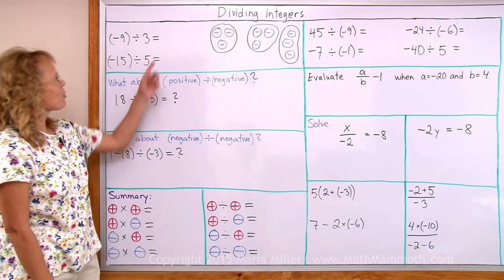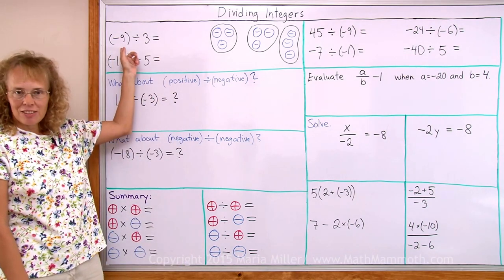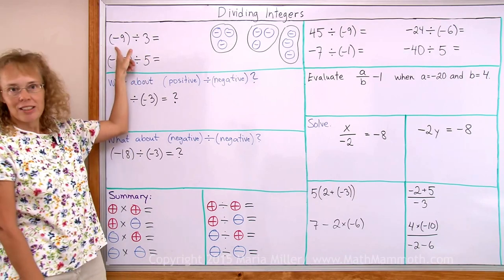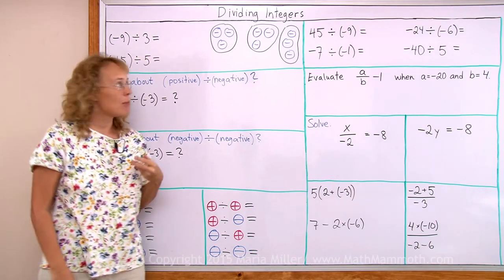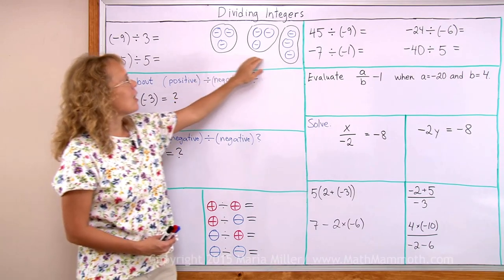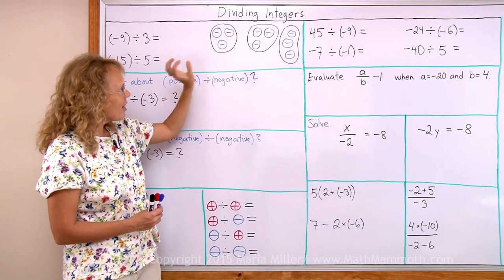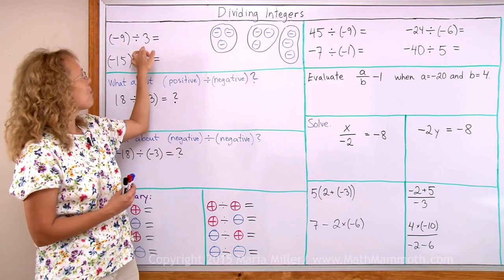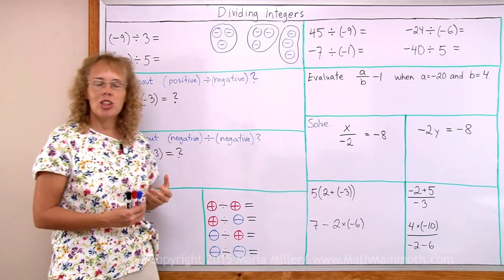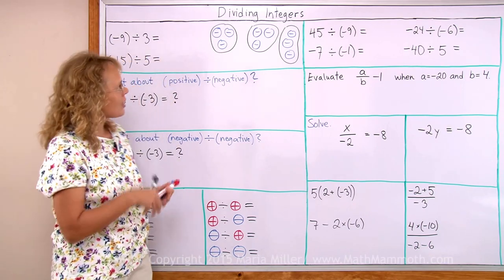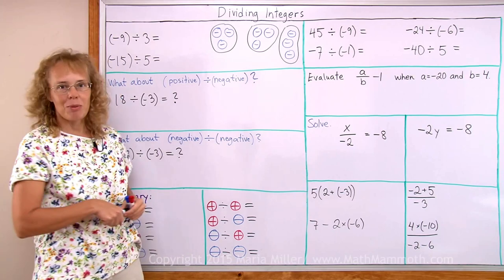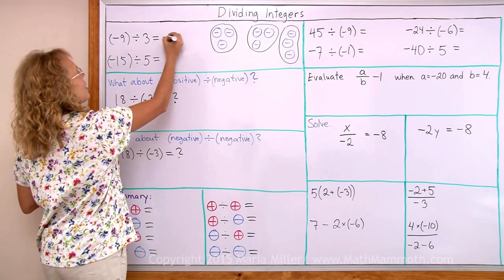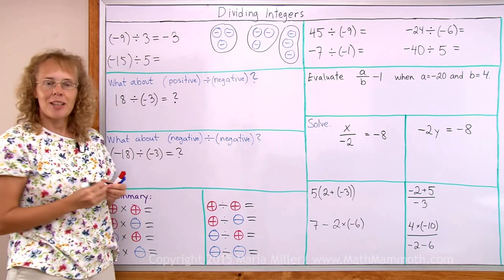My first problems here have a negative number divided by a positive number. For example, negative 9 divided by 3. We can model that with this kind of grouping where I have 9 negatives divided into 3 groups, and then how much is in each group? You can see clearly that there's going to be negative 3 in each group.